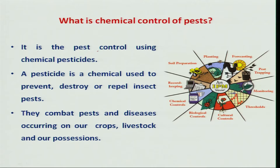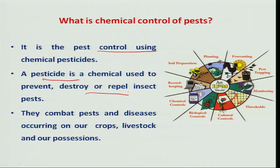Chemical pest control is nothing but using chemicals for controlling insect pests. A pesticide is used to prevent, destroy, or repel insect pests from the source of food — here, the host plants or crop plants. They also combat pests and diseases occurring on our crops, not only on crops but even on livestock and on our possessions, including stored products.